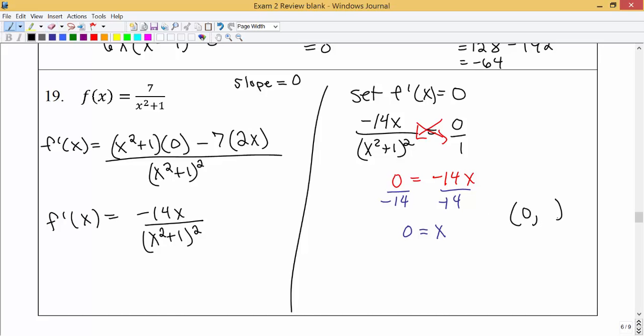So we're looking for the point on the graph of f that has that x value of 0. So we're going to plug in an x value of 0 into the original function. So we get 0 squared plus 1, which of course is just 7 divided by 1, so the y value for that point would be 7. So at (0, 7), the graph has a horizontal tangent line.